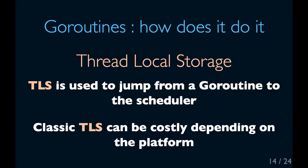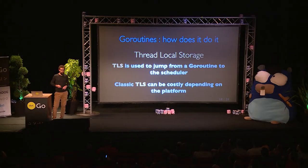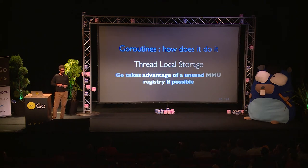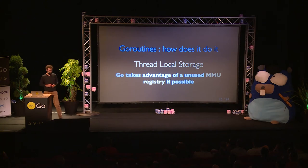The thread-local storage is what is used by the Go routine to find the scheduler. Classic thread-local storage can be costly, but Go is really smart about it and uses some assembly tricks to make it faster. For instance, on Intel processors, it uses an MMU registry if it can.